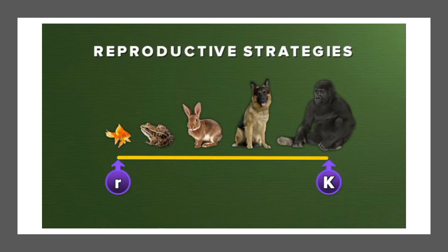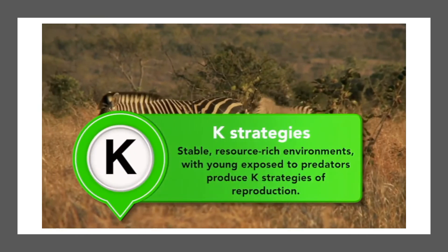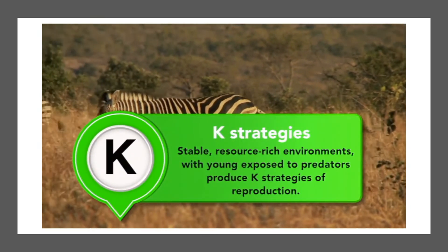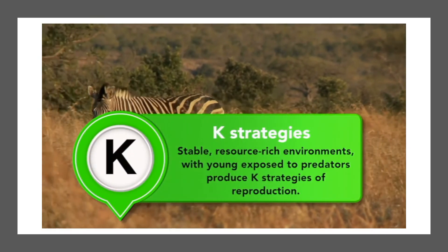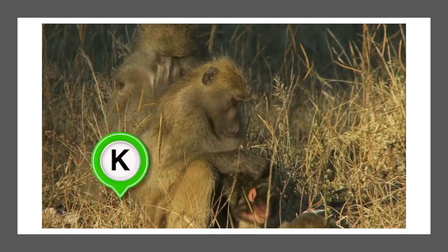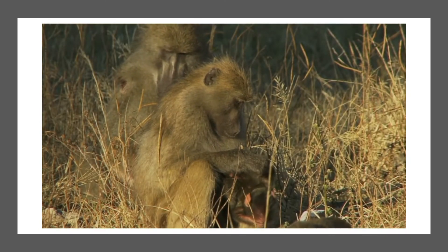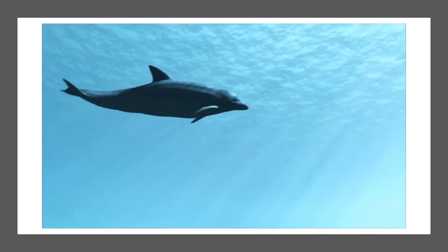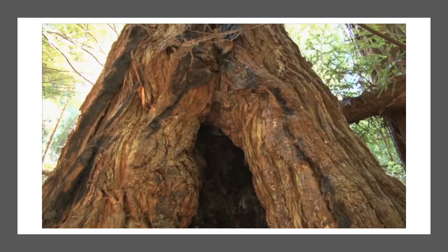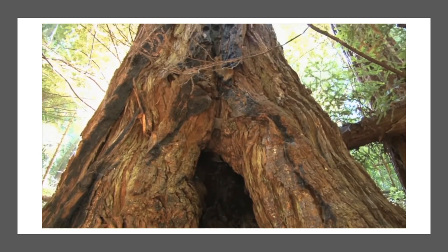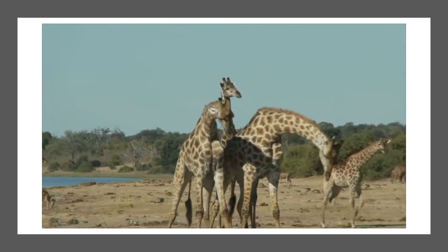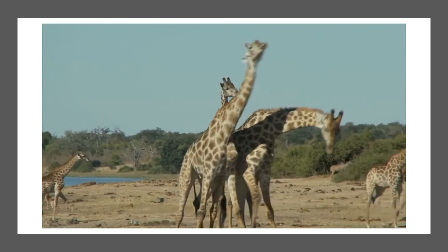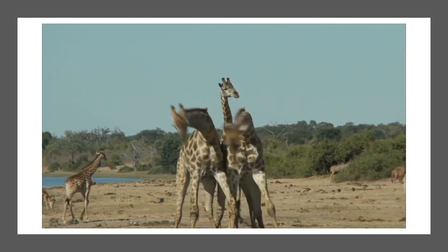Stable, resource-rich environments with young exposed to predators produce K strategies of reproduction. K strategists invest in the development of offspring. Animals such as humans, elephants, dolphins, and plants like sequoia trees use a K reproductive strategy. A species' reproductive strategy affects its reproductive behavior and physical characteristics. For example, K strategists often choose mates through competitive mating rituals, form pair bonds, and create small families with few offspring.